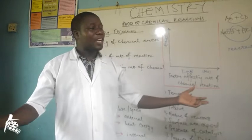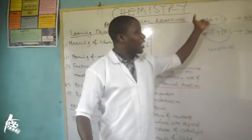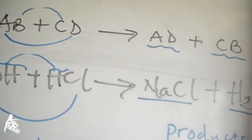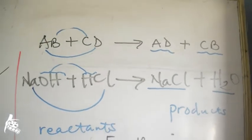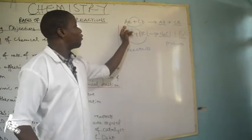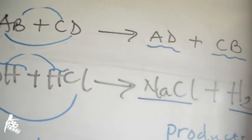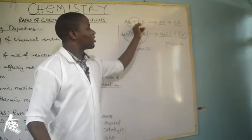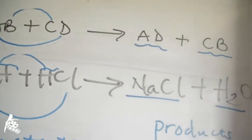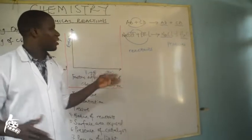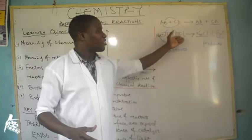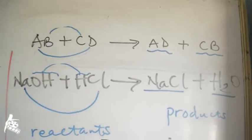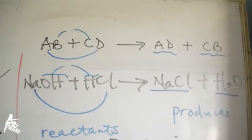In our elementary class, we were taught that AB plus CD will give us AD plus CB. You can see the flow. A coming to D to form AD and B coming to C to form CB. We will be looking at more of such. An example of such is sodium hydroxide reacting with HCl, hydrochloric acid, to give us sodium chloride and water.